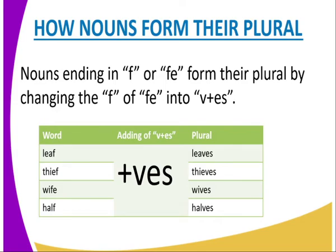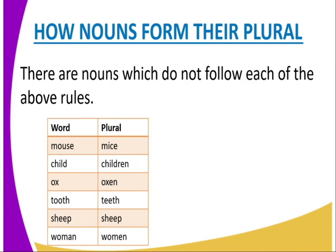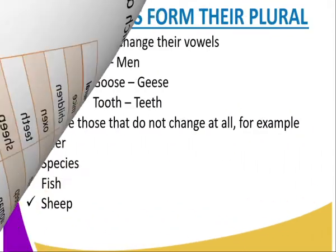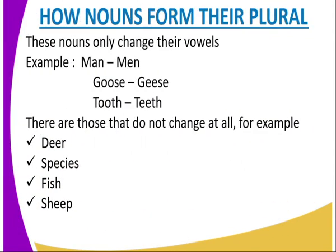Other examples include: thief to thieves, wife to wives, half to halves. We also have nouns that do not follow regular rules but change their form entirely from singular to plural, such as mouse to mice, child to children, ox to oxen, tooth to teeth, sheep remains the same, and woman to women.